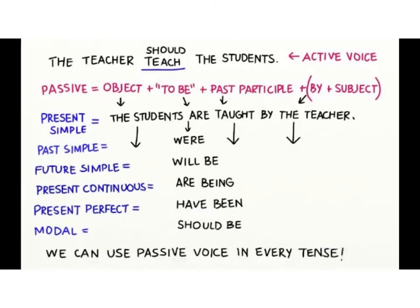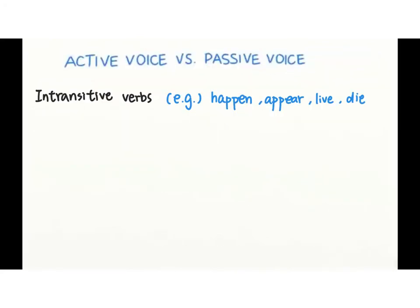Basically, we can use passive voice in every tense. And here are some special cases. For some certain words, for example, happen, appear, live, and die, we are not going to use these to make a passive one.